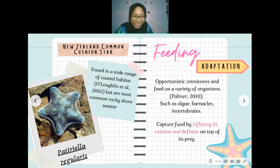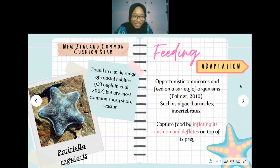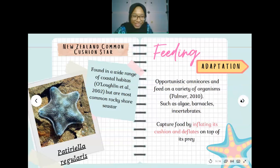The second animal is the New Zealand Common Cushion Star, Patiriella regularis. It is most commonly found along rocky shores and is well adapted for feeding as an opportunistic omnivore, consuming algae, barnacles, and invertebrates. Its unique feeding mechanism involves inflating its cushion body and deflating on top of prey found on rocks.